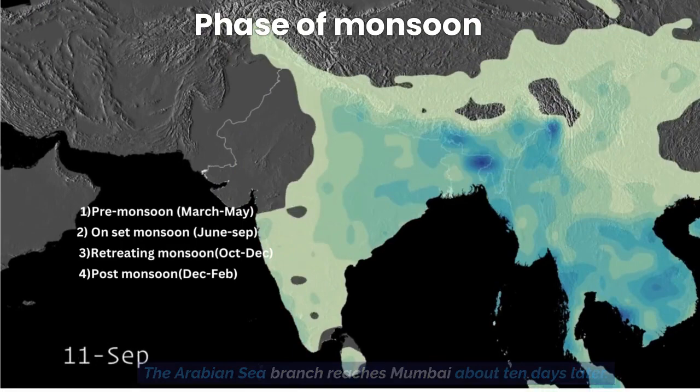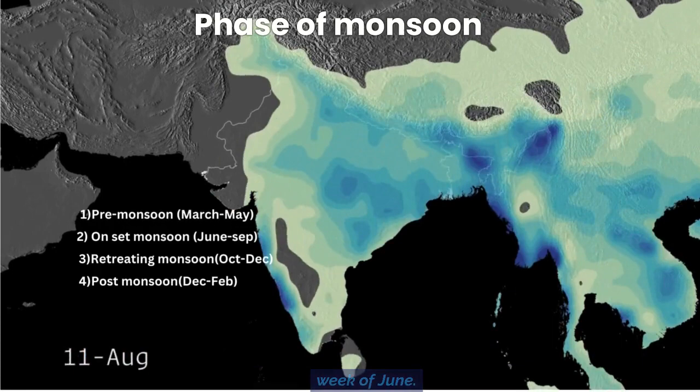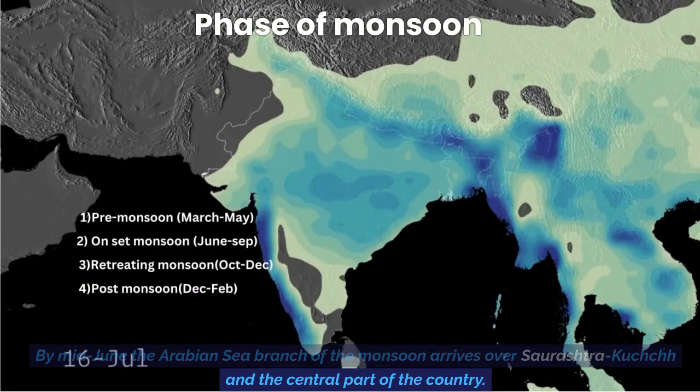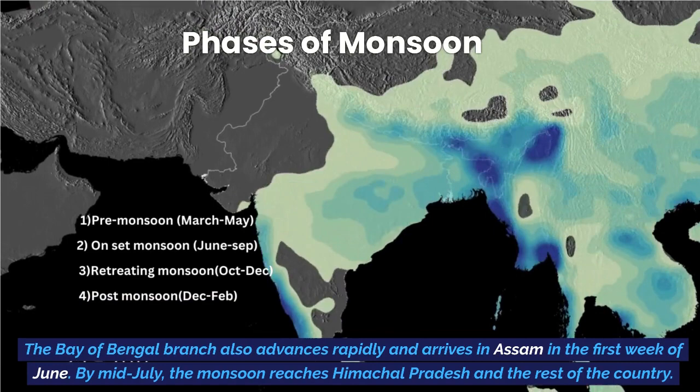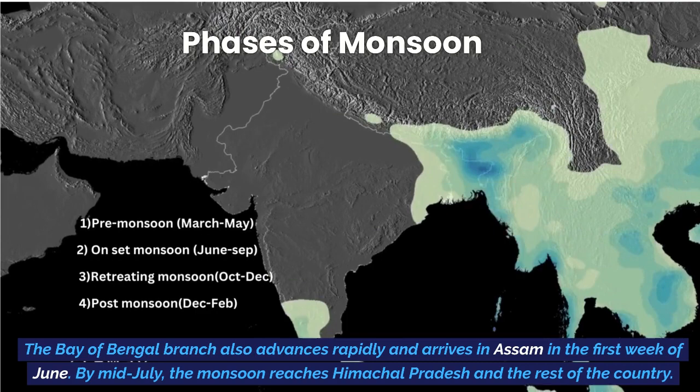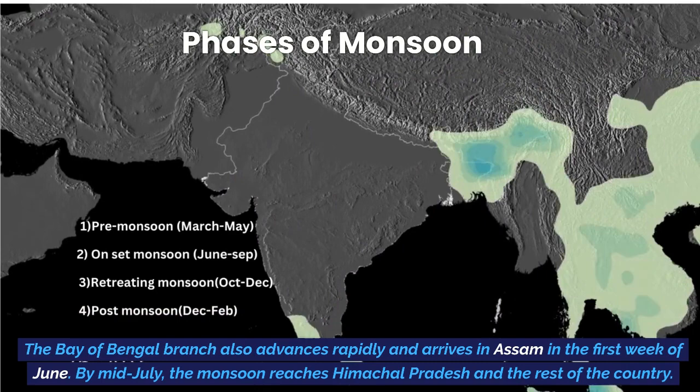Subsequently, the southwest monsoon proceeds into two branches: the Arabian Sea branch and the Bay of Bengal branch. The Arabian Sea branch reaches Mumbai about 10 days later. The monsoon arrives at the southern tip of the Indian peninsula generally by the first week of June. By mid-June, the Arabian Sea branch arrives over Saurashtra, Kutch, and the central part of the country. The Bay of Bengal branch also advances rapidly and arrives in Assam in the first week of June. By mid-July, the monsoon reaches Himachal Pradesh and the rest of the country.